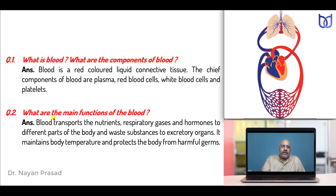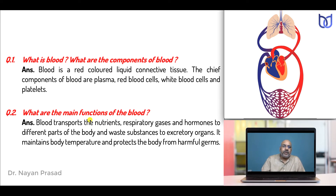What are the main functions of blood? Blood transports nutrients, respiratory gases, and hormones to different parts of the body, and waste substances to excretory organs. It maintains body temperature and protects the body from harmful germs. In this diagram you can see the three components of the circulatory system: the heart, blood vessels shown in two different colors — one for distributing blood, another for collecting blood — and blood as the liquid substance.